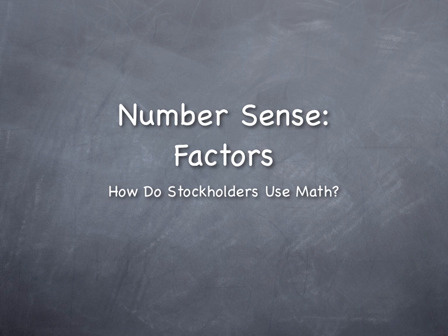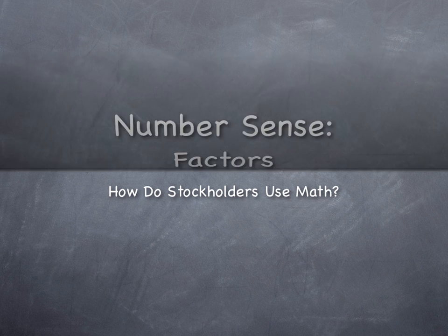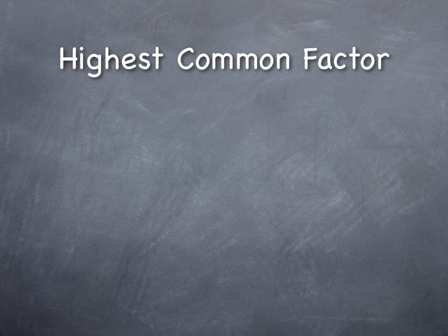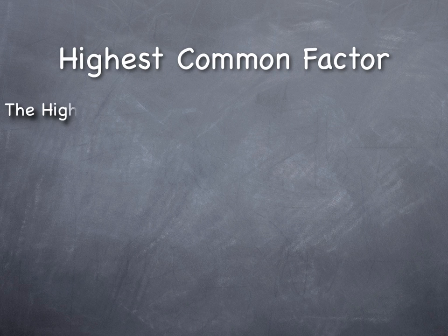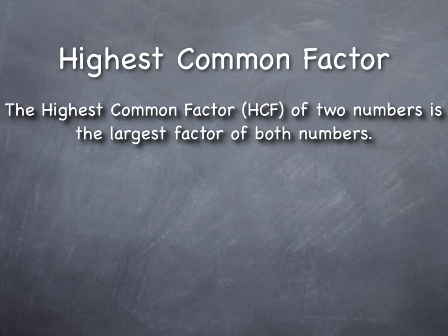We're going to talk some more about number sense and factors, and today we're going to be discussing the highest common factor. We've done a lot of talking about index numbers, factors, and prime numbers, moving us towards this idea of finding highest common factors. Highest common factors for two numbers are going to be the largest factors of both numbers, so we might need to list all of the factors.